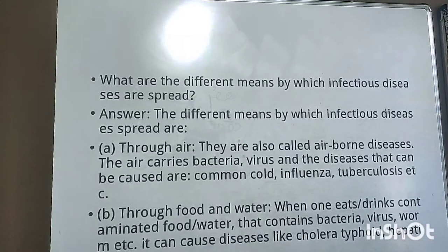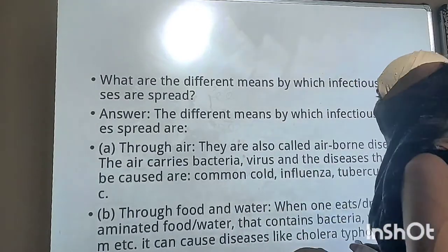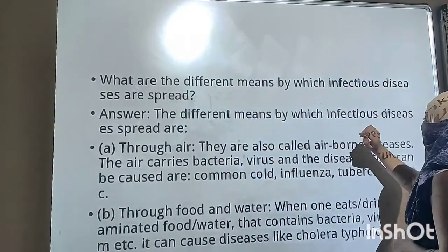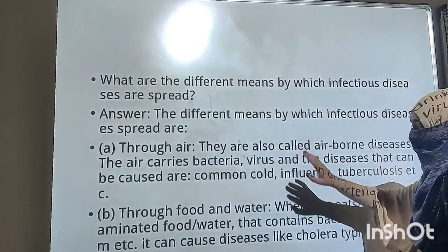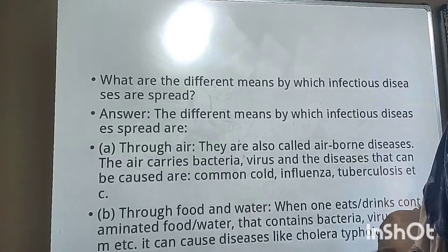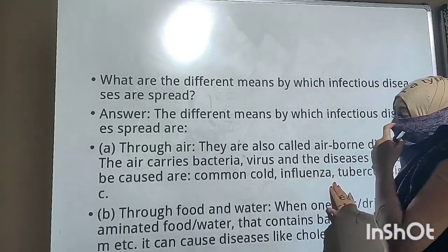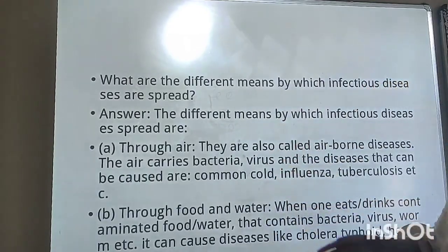It's about three to four lines for each point, but it depends on the marks assigned. For better representation, you can mention the different ways infectious diseases spread — through air, through food and water — make a list, and then explain each one in detail. They can also ask you to explain any two of them in detail, so mention all the list items first, then explain one or two.